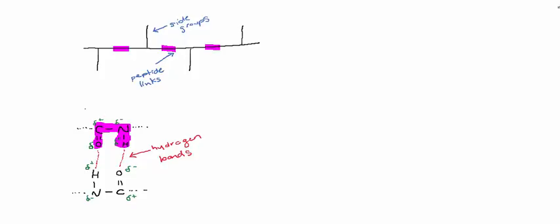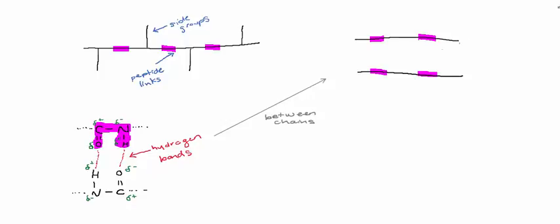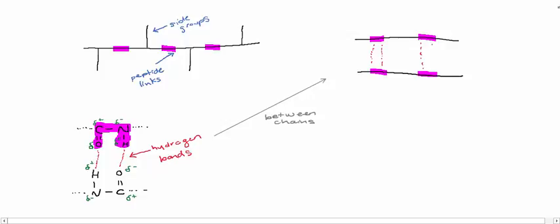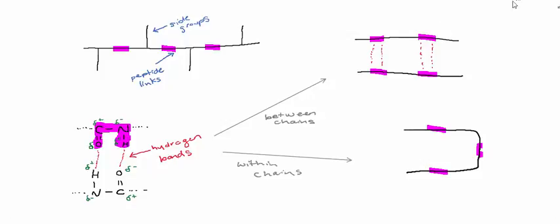There are a few things this ability to hydrogen bond can do. Firstly, hydrogen bonding can occur either within or between chains. Between chains, the neighboring amide groups within those chains are able to form hydrogen bonds which hold those chains closer together. Alternatively, hydrogen bonding can occur within a chain — the protein chain is twisted around and hydrogen bonds can form between those peptide links, holding the chain in that shape.